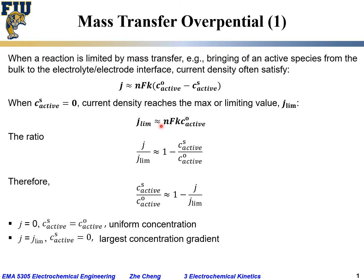At limiting current, we have the largest concentration gradient because the difference between bulk concentration and surface concentration is maximized over the same distance. Under that condition we reach the limiting current density. The current cannot go any larger because the reaction is limited by how fast mass transfer can occur.